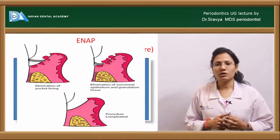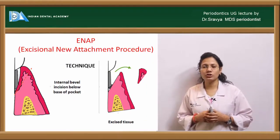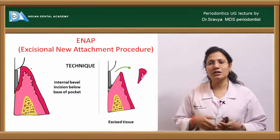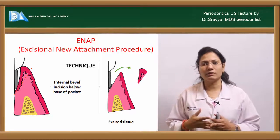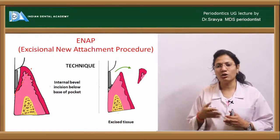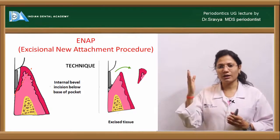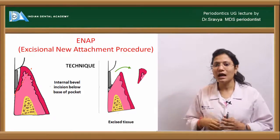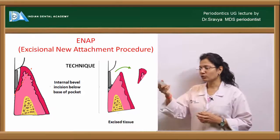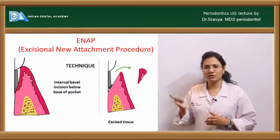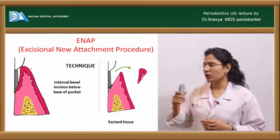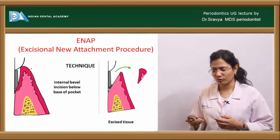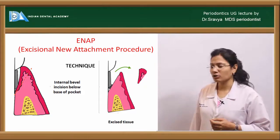Another technique is the excisional new attachment procedure (ENAP). Here, an internal bevel incision is made — an incision where the blade or incision line is directed towards the alveolar crest. You give the internal bevel incision, remove that chunk of tissue, and if needed, proceed with suturing and place a periodontal pack.